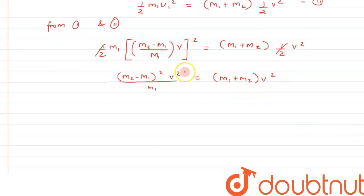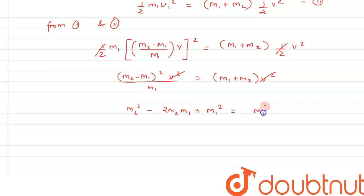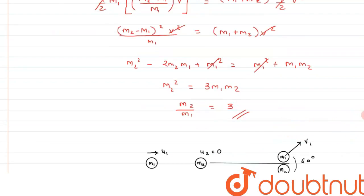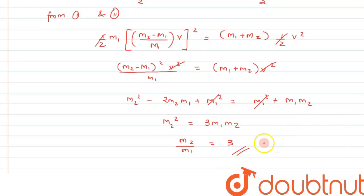v² cancels out, and expanding: m2² - 2*m2*m1 + m1² equals m1² + m1*m2. The m1² terms cancel, leaving m2² = 3*m1*m2, and m2 cancels, giving m2/m1 = 3. Therefore the ratio m1/m2 equals 1/3. This is the answer to the first part.